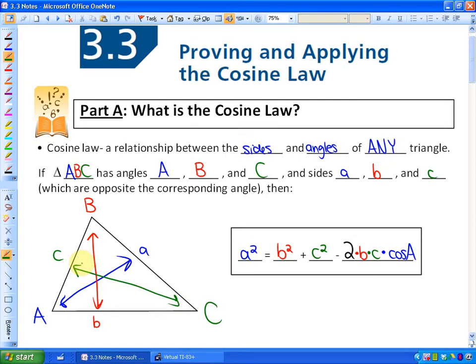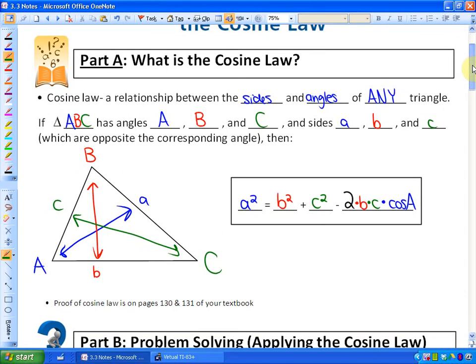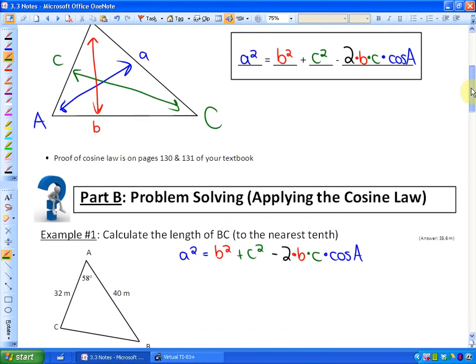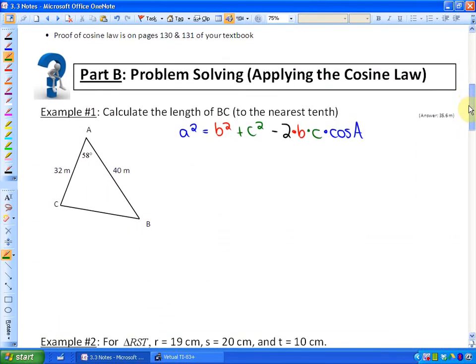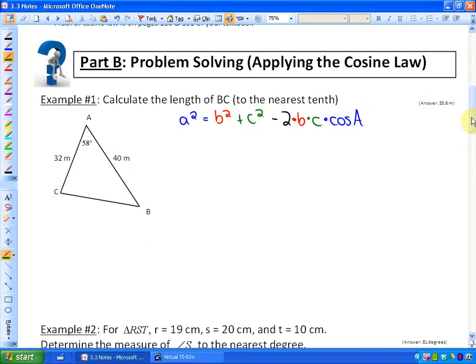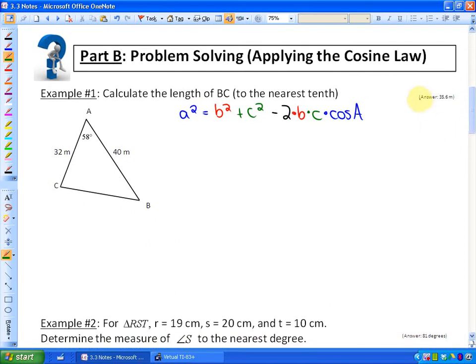What the cosine law says then is that a squared, so side a squared, is equivalent to b squared plus c squared minus the product of 2 times side b times side c times cosine of angle A. So what we're going to look at next is how to solve for an angle using the cosine law and how to solve for a side using the cosine law. And if at any point in time you'd like to pause this and work at some problems on your own, you're more than welcome to, and you can see the answer up here, up and to the right.